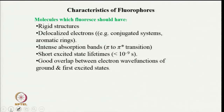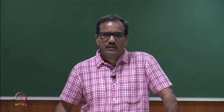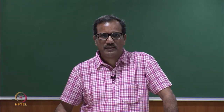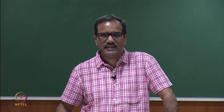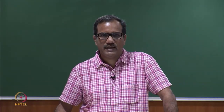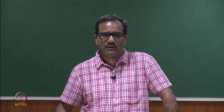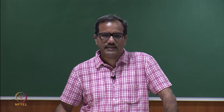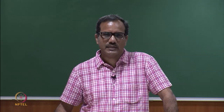The characteristics of fluorophores — molecules which fluoresce — are that the molecule must have a rigid structure and delocalized electrons. For example, a conjugated system or aromatic ring. They must have intense absorption bands with pi to pi star transitions. They should have a short excited state lifetime of less than a nanosecond, and there should be good overlap between electron wave functions of the ground and first excited state. We then look at their fluorescence spectra.